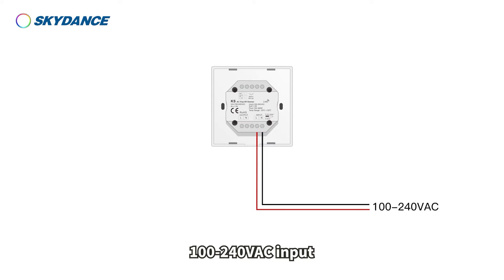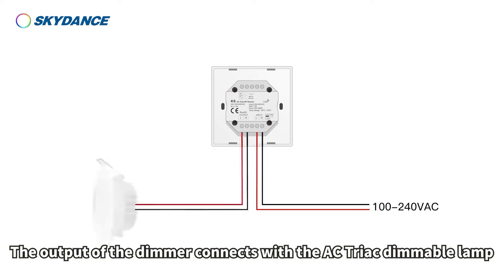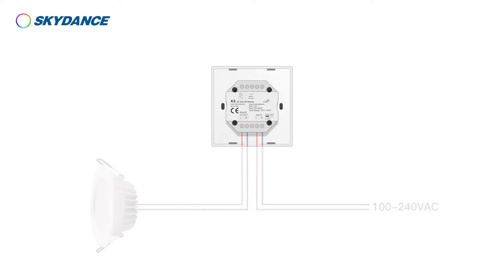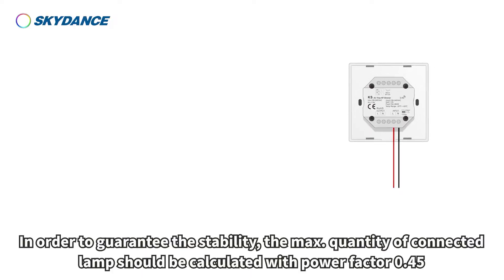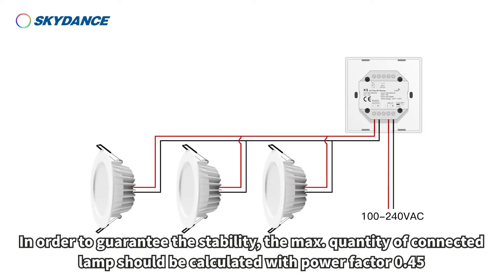Application 2: 100–240 volts AC input. The output of the dimmer connects with the AC triac dimmable lamp. When the dimmer connects with multiple lamps, in order to guarantee stability, the max quantity of connected lamps should be calculated with power factor 0.45.